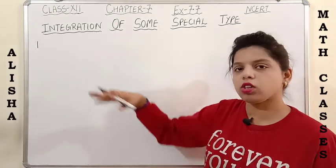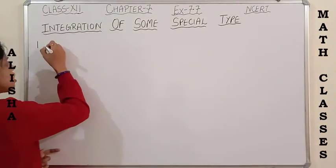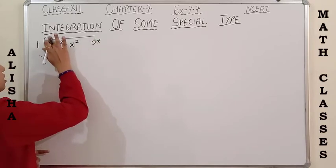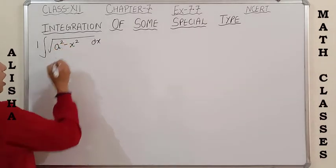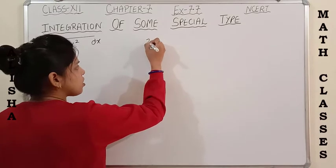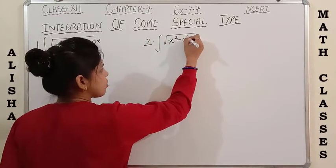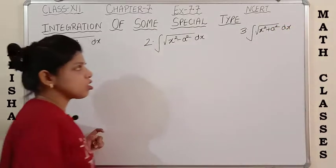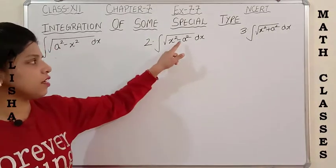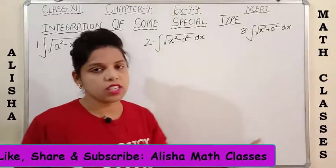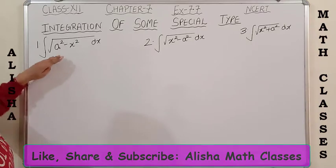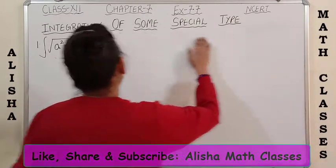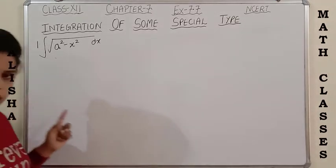The first type is the integration of √(a²−x²). We will specifically discuss the integration of these three types: √(a²−x²), √(x²−a²), and √(x²+a²). The second and third differ only in sign — negative vs positive — so I'll solve one and you can solve the other by the same process. We can do the integration by two methods: integration by parts (ILATE method) or substitution, putting x = a·sinθ or cosθ.